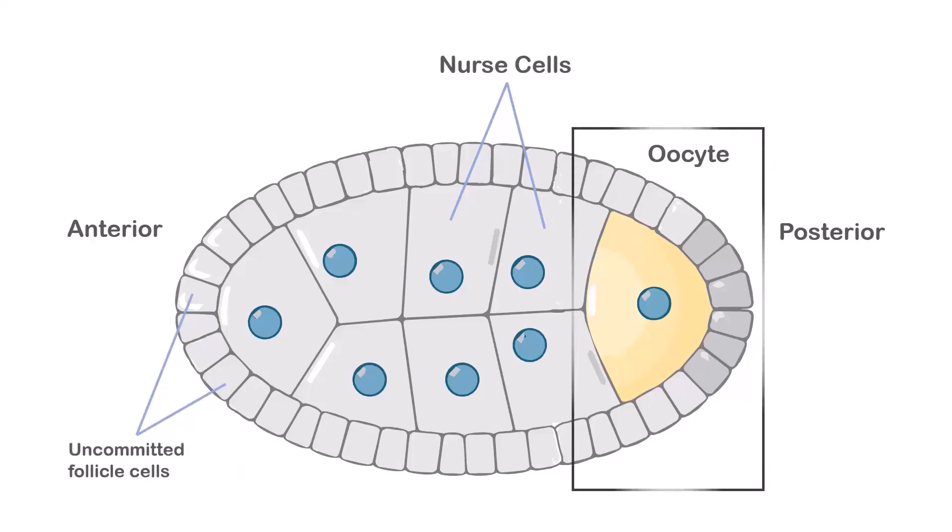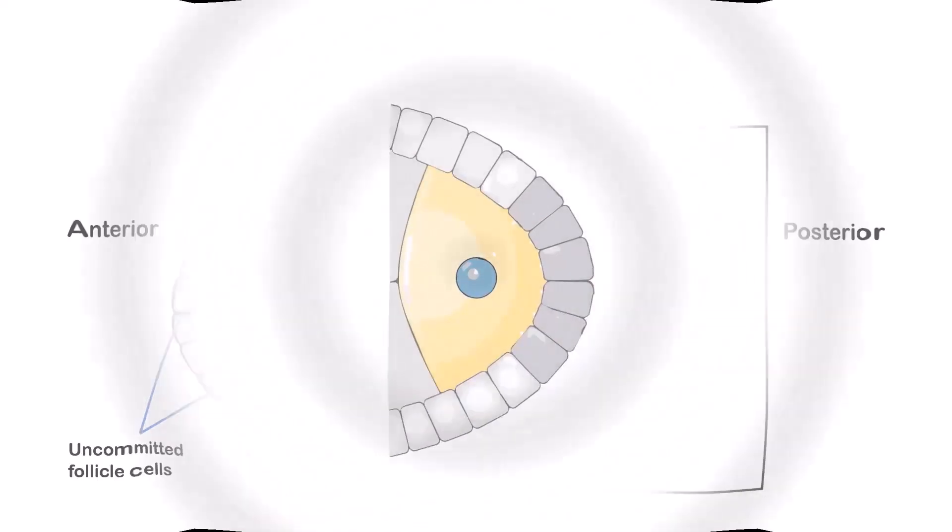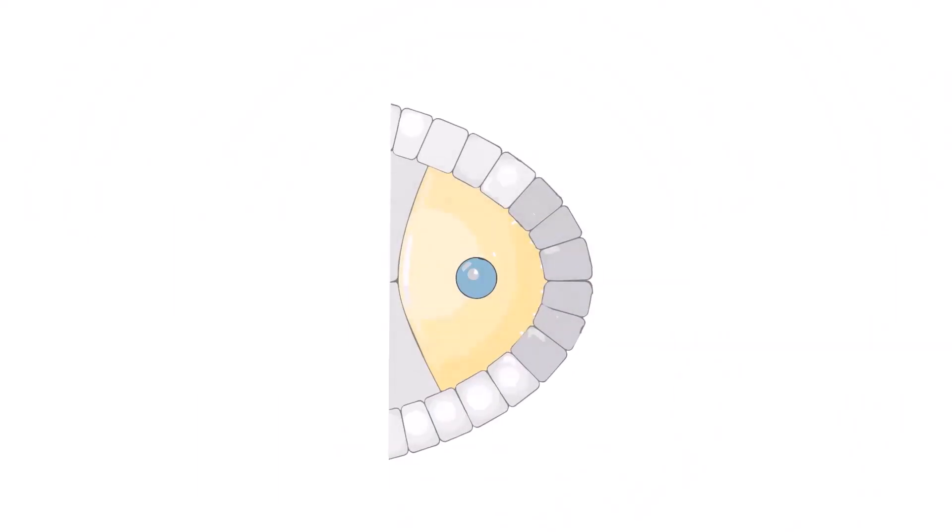Now, coming to the oocyte region, let's zoom into the posterior part. The oocyte nucleus moves toward the terminal follicle cells and synthesizes Gurken proteins.